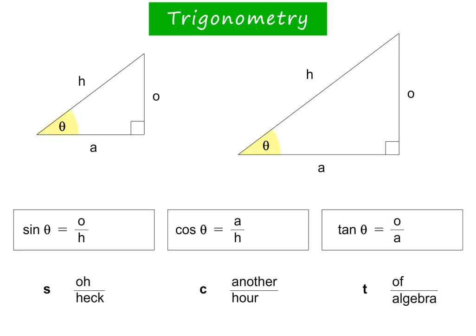Please note, it does not matter how big or small the triangles are. If the angles are the same, the ratios will always have the same value. In other words, sine theta will have the same value in both triangles, cos theta will have the same value, and so will tan theta. Let's go on to see how to use all of this information.